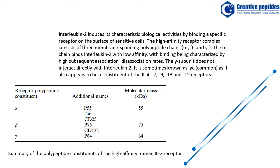The gamma subunit does not interact directly with interleukin-2. It is sometimes known as gamma-C common, as it also appears to be a constituent of the interleukin-4, -7, -9, -13, and -15 receptors.